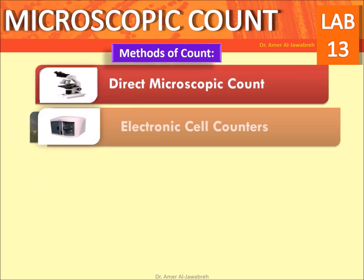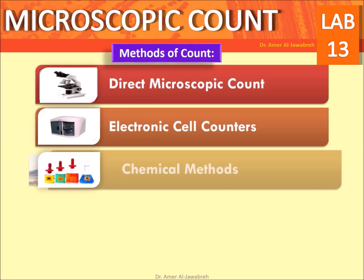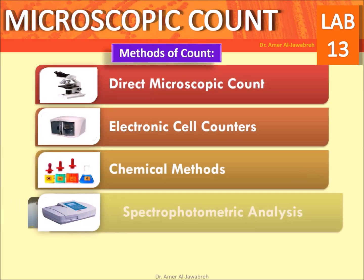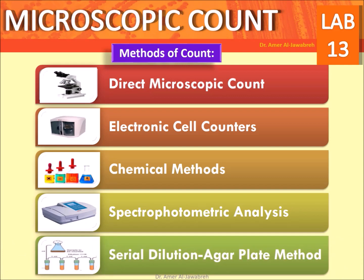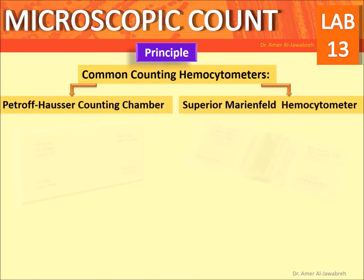Methods of counting bacteria include: direct microscopic count, electronic cell counters, chemical methods, spectrophotometric analysis, serial dilution, and the agar plate method.